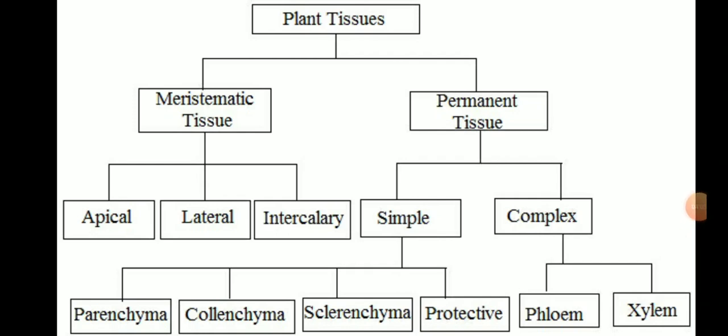Plant tissue is divided into two types: meristematic tissue and permanent tissue. Meristematic tissue is further divided into apical meristem, lateral meristem, and intercalary meristem. Permanent tissue is divided into simple and complex tissue. In simple tissue there are parenchyma, colenchyma, sclerenchyma, and protective tissue, and in complex tissue there is phloem and xylem.